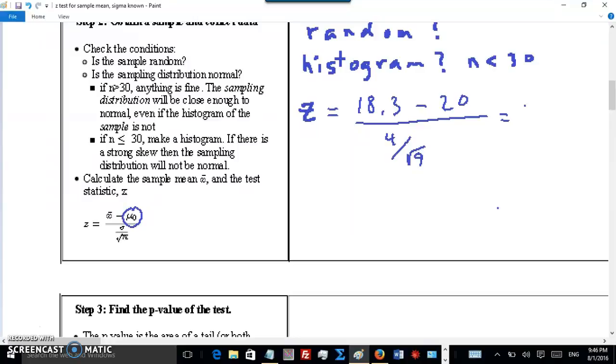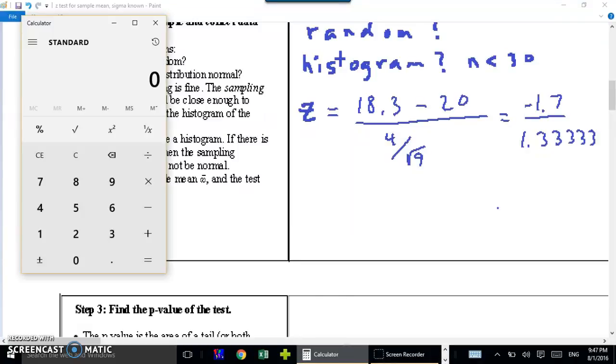Let's do this calculation. 18.3 minus 20 is negative 1.7. 4 over square root of 9, well, that's 4 over 3, which is 1.333. Let's get our calculator here. So 1.7 divided by 1.333 is 1.275. I'll round that to 1.28.